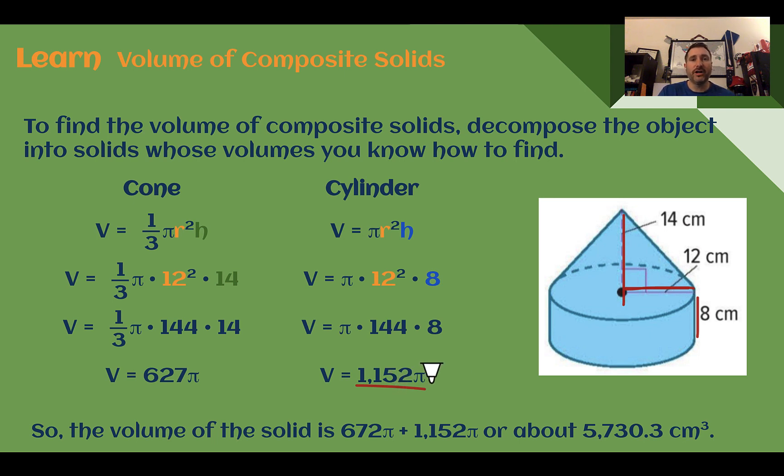So to find the volume of this overall shape, we would just add these two things together. So 672π plus 1152π equals 1824π. If we wanted to find a more approximate value, we could multiply it now by 3.14 or use that pi button, and we would get a decimal answer. But just like we were figuring out when we were doing the individual solids, read the question to find out which one it asks for. The pi symbol is the exact value, decimal is approximate.